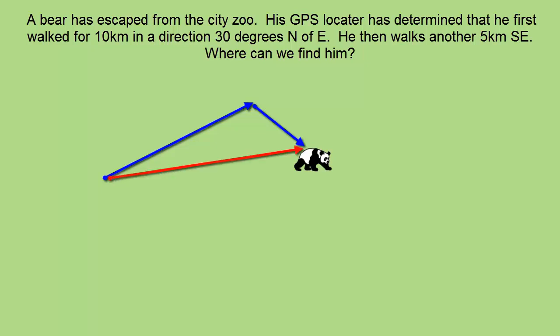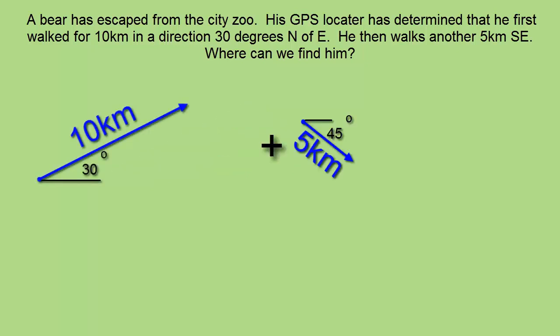So to do this we want to separate the vectors and look at each one independently. The bear first walks in a direction of 10 kilometers at 30 degrees north of east as shown, and then we're adding to that a 5 kilometer vector southeast, which automatically means 45 degrees.